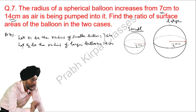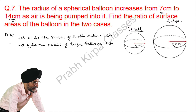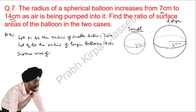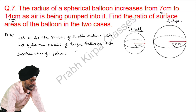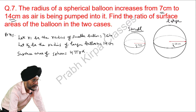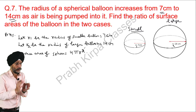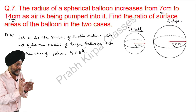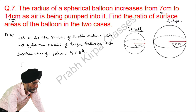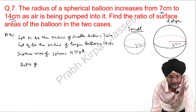You also know the formula to calculate the surface area of a sphere. Surface area of a sphere — because it is a spherical balloon, that is a sphere — the formula is 4 pi r square. Now what we have to calculate is the ratio of surface area of the balloon in the two cases. We will take the ratio of the two surface areas.